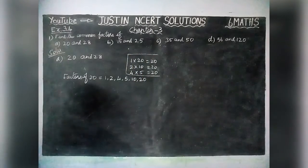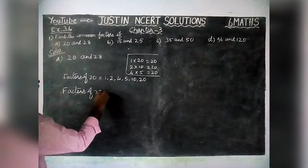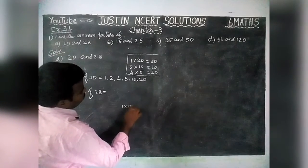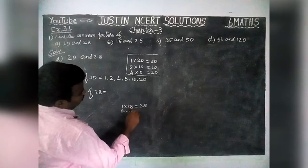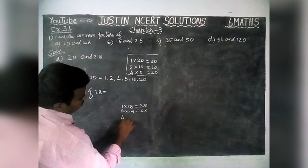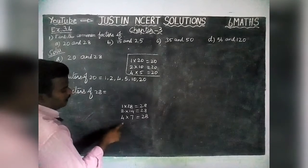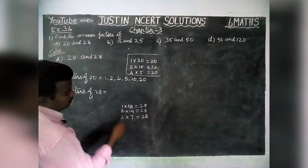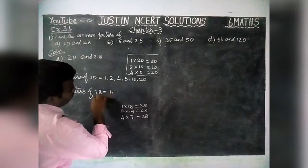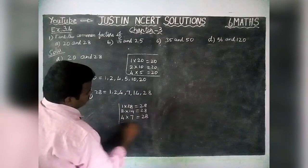You can write this in rough work. Next, factors of 28. We have to find all the factors of 28. In rough work: 1×28 is 28, 2×14 is 28, 3 will not come, 4×7 is 28, 5 will not come, 6 will not come, 7×4 is 28, 14×2 is 28, 28×1 is 28. Therefore, the factors of 28 are equal to 1, 2, 4, 7, 14 and 28.